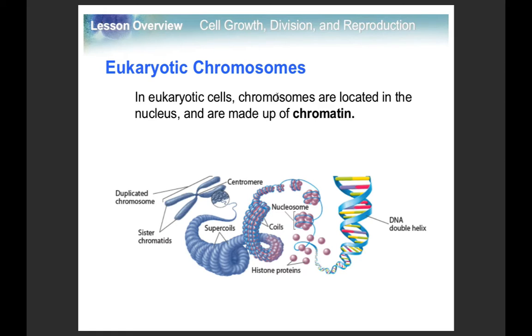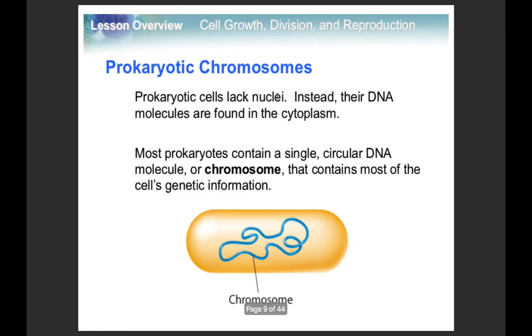When talking about DNA in prokaryotes, it's a little different. Their DNA is kind of circular, because of the way they reproduce. They don't need as much complicated DNA as we do.